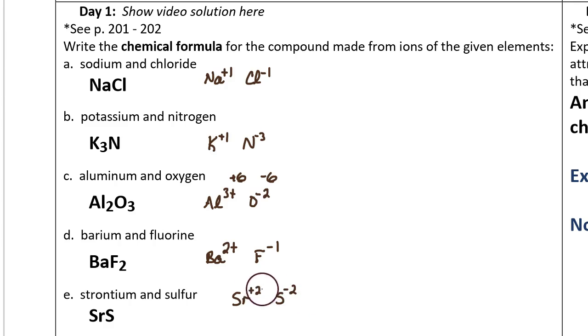When you add those together, that does make a neutral compound, because positive two plus negative two adds to zero. It only takes one of each to make a balanced neutral compound. So the answer is SrS. When subscripts are just ones, we don't actually write the ones in there.